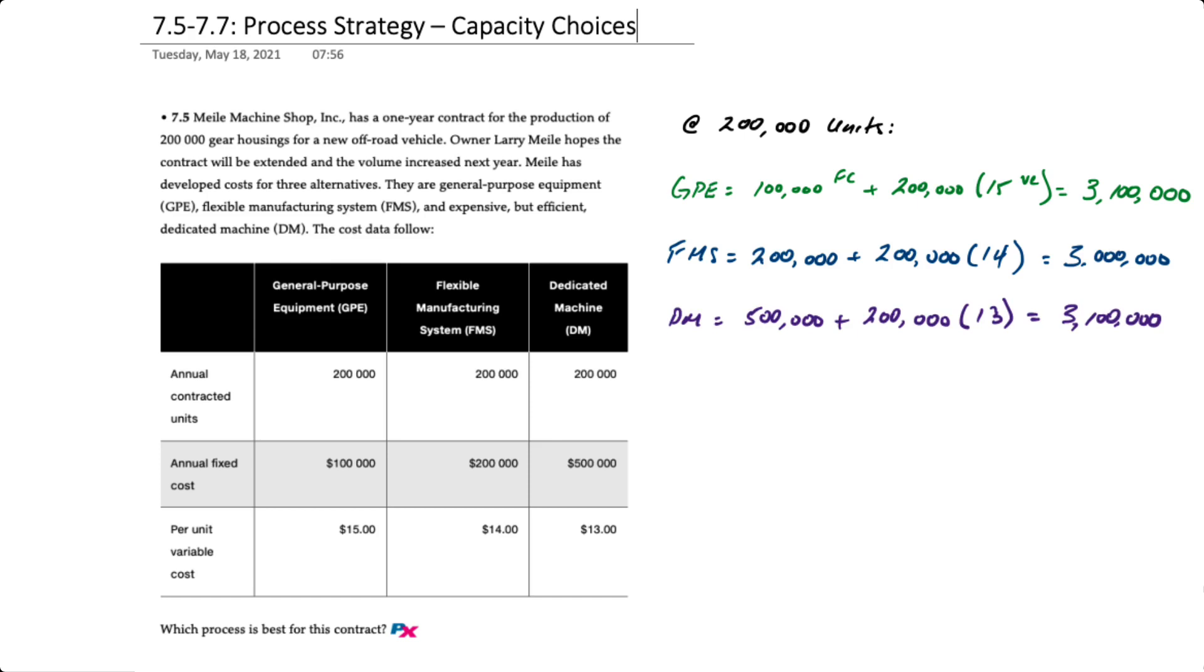And finally for the dedicated machine or DM we take a fixed cost of $500,000 plus 200,000 units times $13 in variable cost, that gives us $3.1 million. So the flexible manufacturing system is the least cost alternative of all three, with GPE and DM actually costing the same.